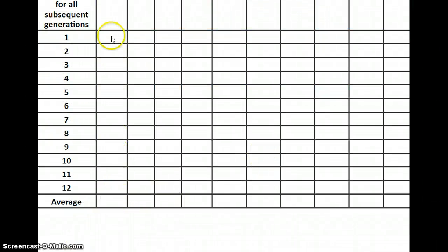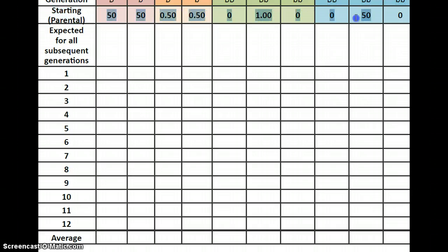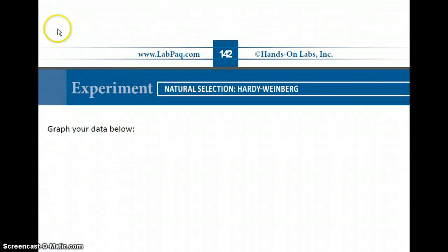What will change is the number of genotypes due to the random chance of reproduction each generation. At the end, you're going to average the results of 12 generations. Your expectation should be that after averaging the variability across 12 generations, you still get the same expectations you calculated at the very beginning — because you know the population is not evolving. The alleles remain the same: 50 big B and 50 little b, 50 dominant and 50 recessive.